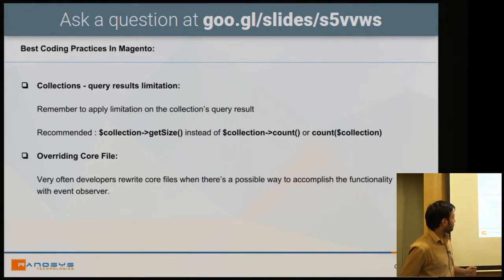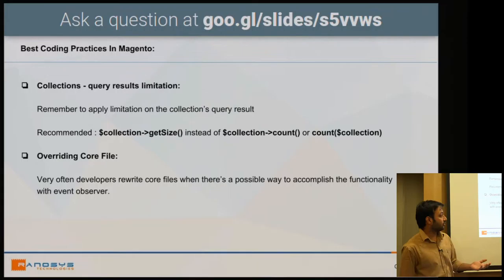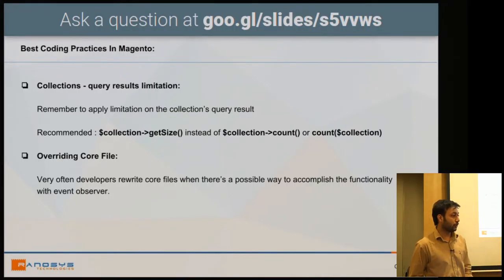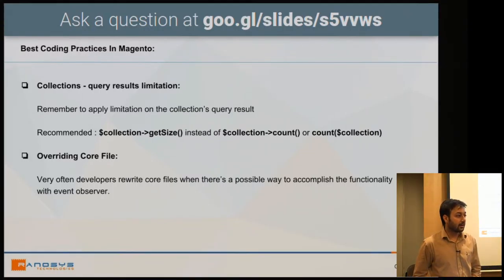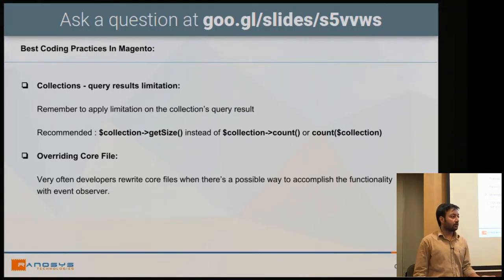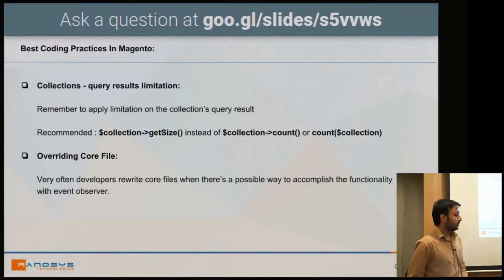Another common issue is overriding core files. Developers often rewrite core files when the functionality could be accomplished using observers instead. Magento has a very useful feature called event observers. For example, if you need to add or restrict a condition when a user adds a product to the cart, you don't need to modify core Magento code — there are already events like add_to_cart_before or add_to_cart_after where you can write your logic.